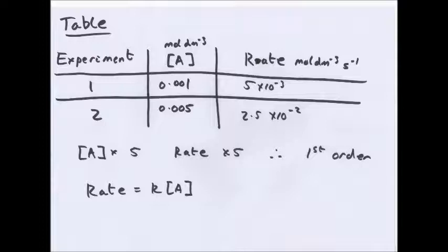Now, the table method for working out orders. Here, you usually have a few more experiments and a few more reactants, but I've just done it to simplify. Experiment one, experiment two. You look at the change of the concentrations of one product. So here, just A has changed from 0.001 mol per dm cubed to 0.005 mol per dm cubed. It's times by five. The rate started off at five times ten to the minus three mol per dm cubed s minus one. And then it increased to 2.5 times ten to the minus two. So that also times by five. So that means it's first order.